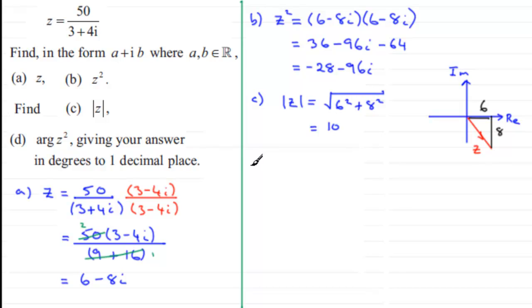Now in the last part d we've got to find the arg of z squared giving our answer in degrees to one decimal place. So we've got z squared minus 28 minus 96i and for this one I'd want to sketch the complex number z squared on an argand diagram. So again we've got our real axis and imaginary axis and we're going to find that complex number minus 28 minus 96i somewhere in this quadrant. So we're going to go 28 units to the left, 96 units down, it's not drawn to scale but you're going to get something looking like this.